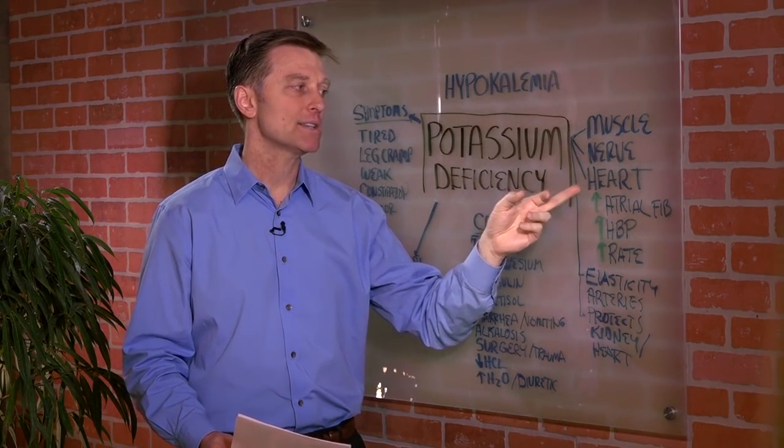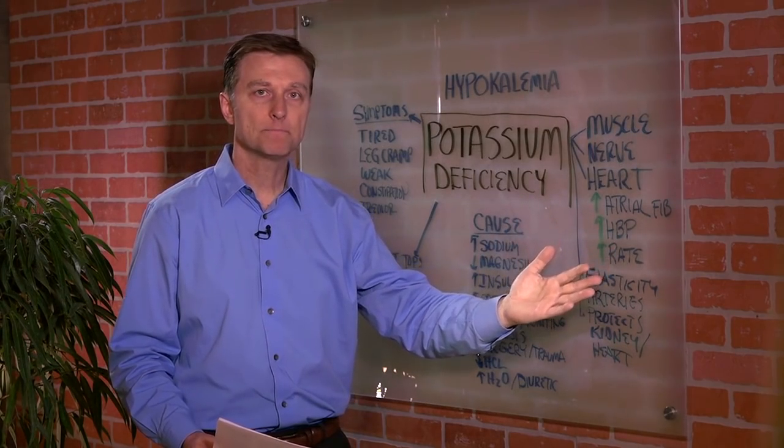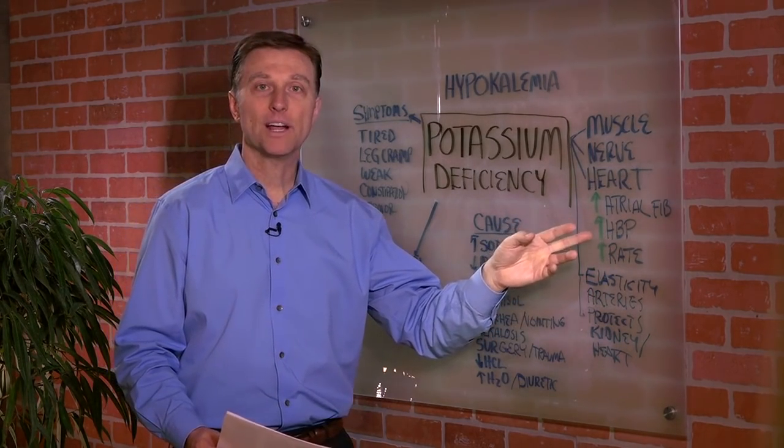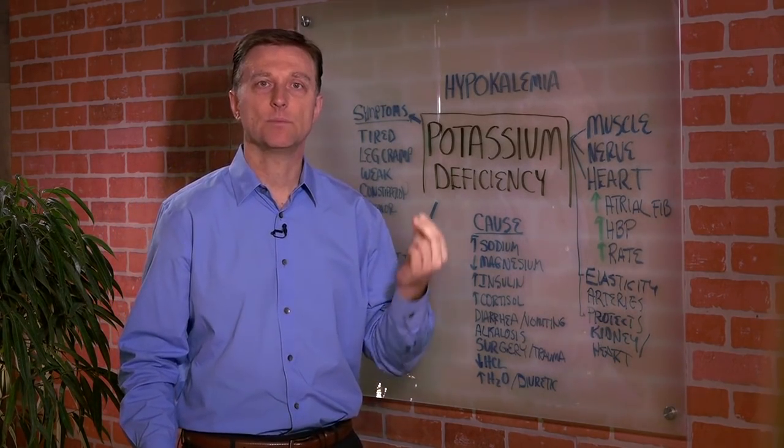Nerve physiology, and cardiovascular physiology. You could also have atrial fibrillation, which is a rhythm problem of the heart. High blood pressure. In fact, in most cases of high blood pressure, there is a potassium deficiency.